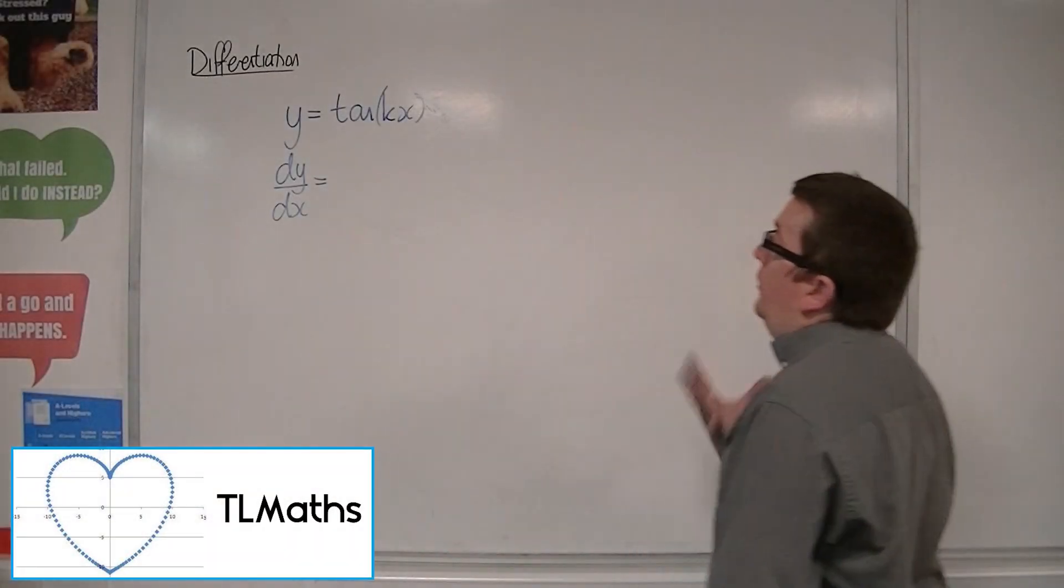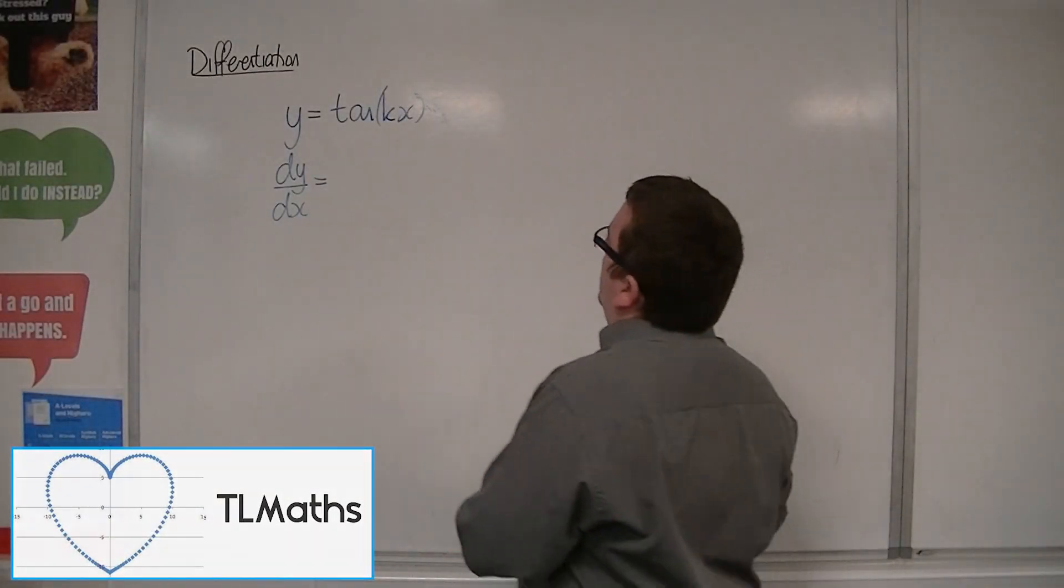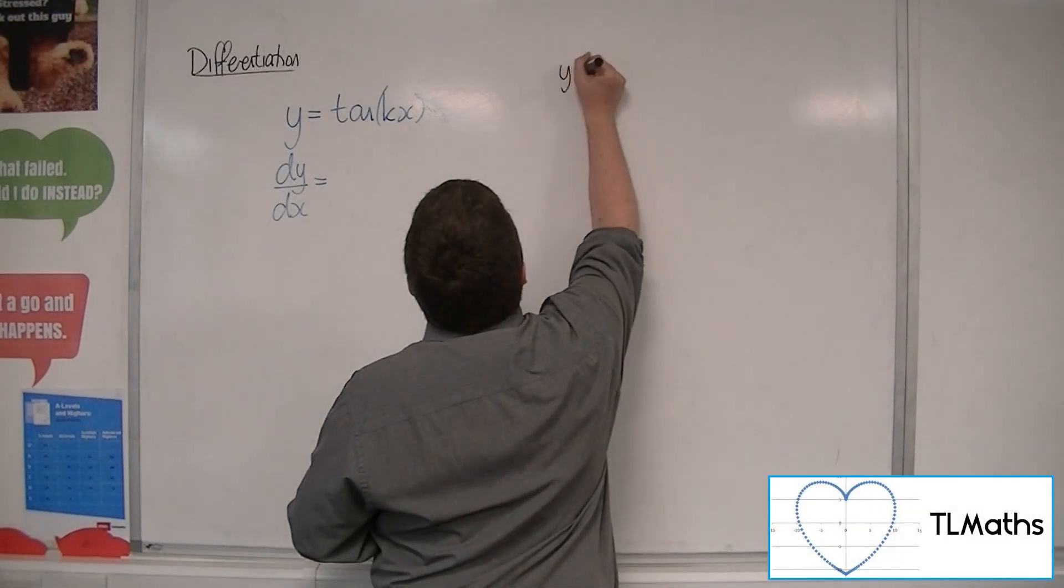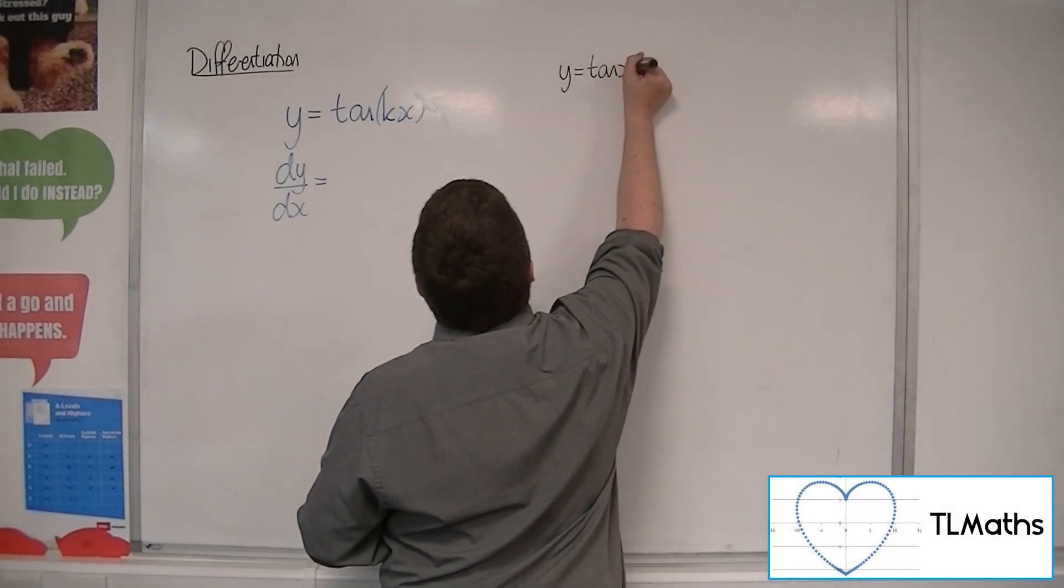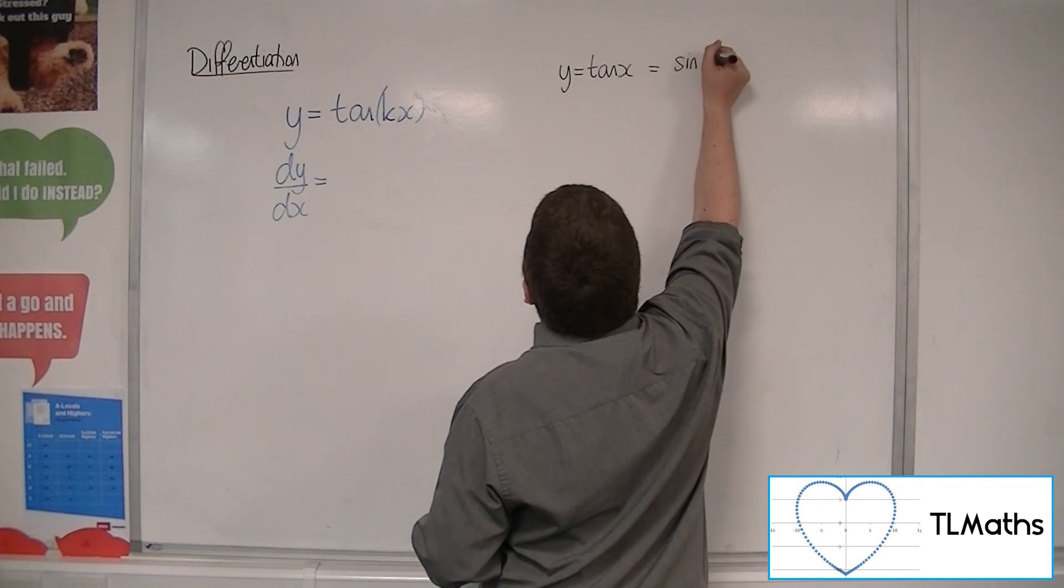OK, so tan of kx. Well, first of all, if we look at y equals tan of x, then tan we know is sin x over cos x.